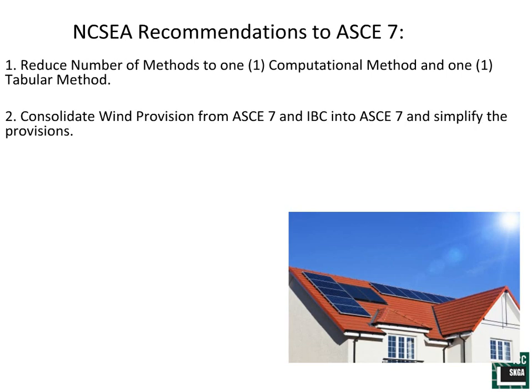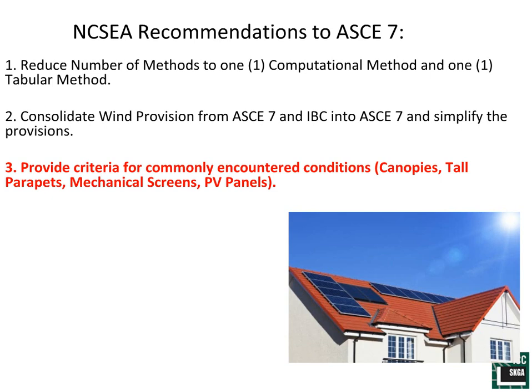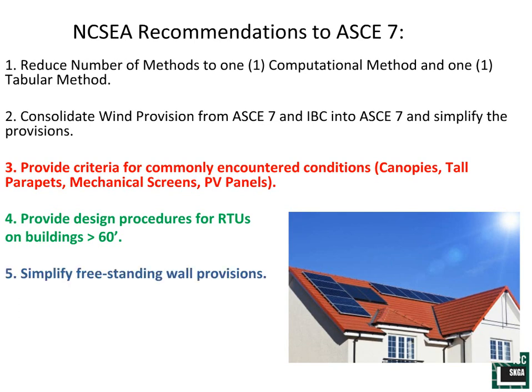The third recommendation, which we will talk about today, was a request to provide criteria for commonly encountered conditions — for example, canopies, tall parapets, mechanical screen walls, and solar PV. The fourth request was to provide design procedures for rooftop units on buildings over 60 feet — again, a topic we will discuss today. The fifth recommendation was to simplify the freestanding wall provisions. While unfortunately that didn't happen in this last code cycle, we are going to take a stab at simplifying those provisions here for you today.